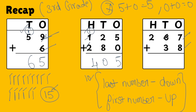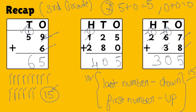Next, 7 plus 8 — for the first few days, draw lines and count the total. After you are very thorough, you can count mentally. 7 plus 8 is 15. How to write 15? There are 2 digits, so last number down, first number up. Then 1 plus 6 is 7, 7 plus 3 is 10 — last number down, first number up. Then 1 plus 2 is 3.